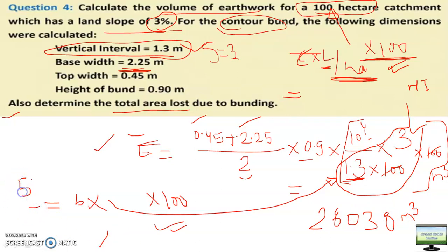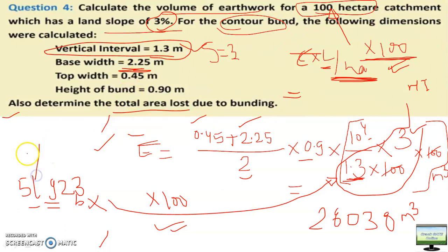Note: in this question, side and lateral bunds are not mentioned. If the question states that side and lateral bunds are also constructed, multiply both the earthwork and area lost values by 1.3 to get the final answer.